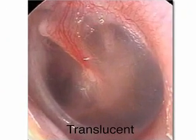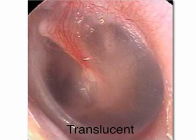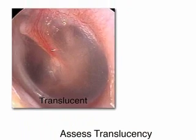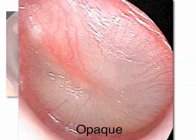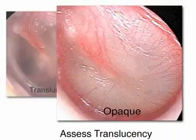Next, assess the translucency of the tympanic membrane. A translucent tympanic membrane has a ground glass appearance and allows visualization of the underlying middle ear structures. When middle ear effusion is present, the tympanic membrane appears opaque and visualization of middle ear landmarks is impaired.